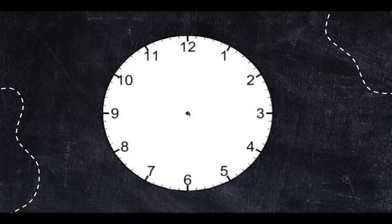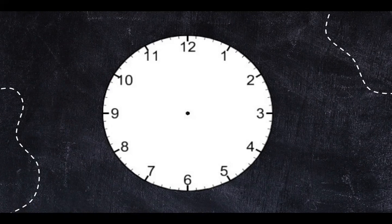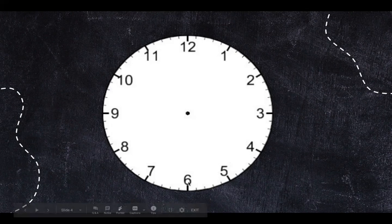What are the numbers for on the clock? The numbers tell us the hours. So when the hour hand is pointed at a number it is the hours.